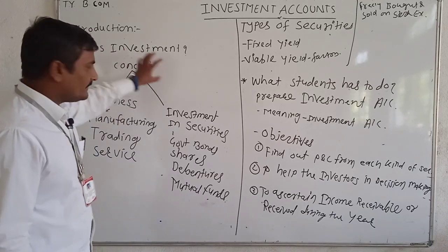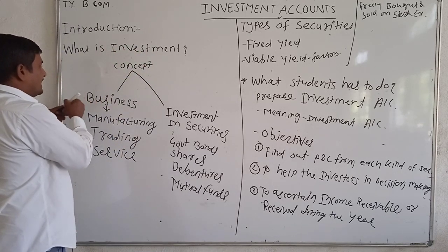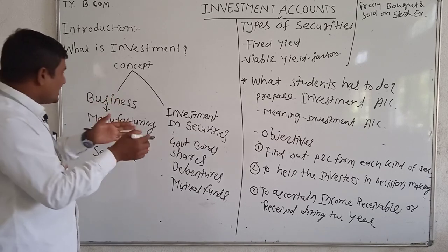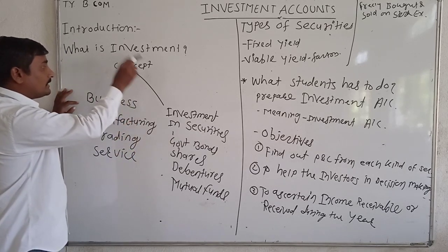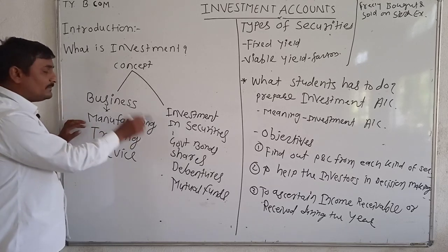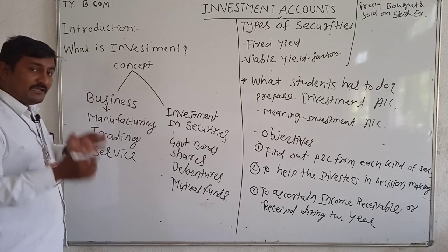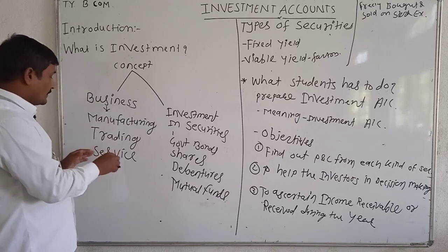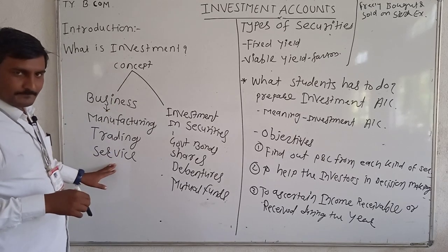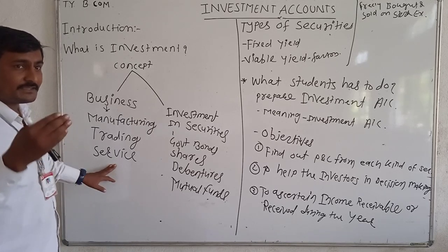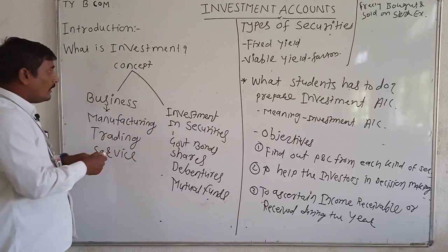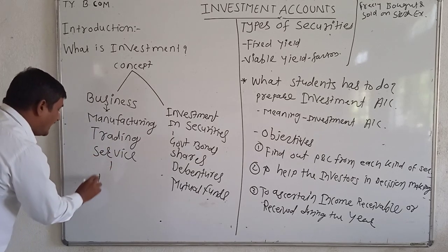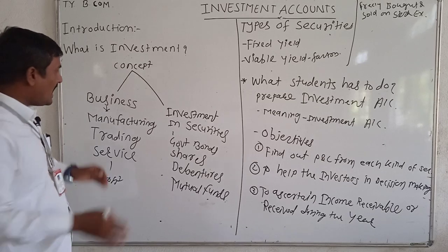There are two angles to understand investment. The first angle: investment is the money invested into a business. For example, money invested into a manufacturing business, money invested into a trading business (buy and sell), or money invested into a service business — one which renders services to consumers — all of these are investments.